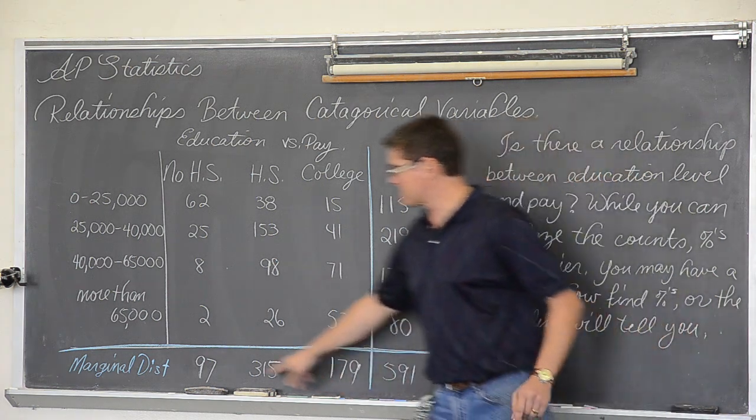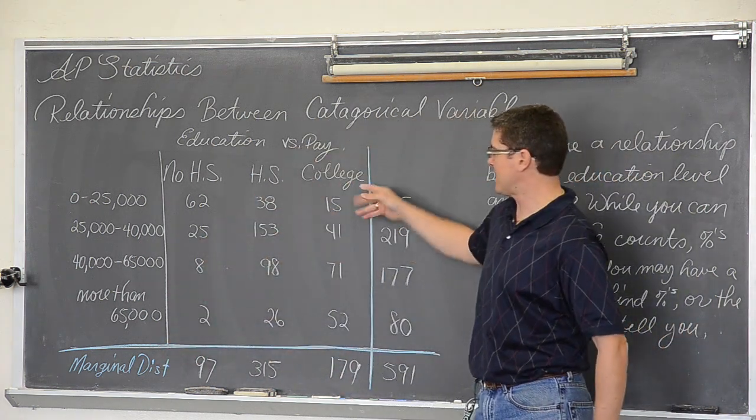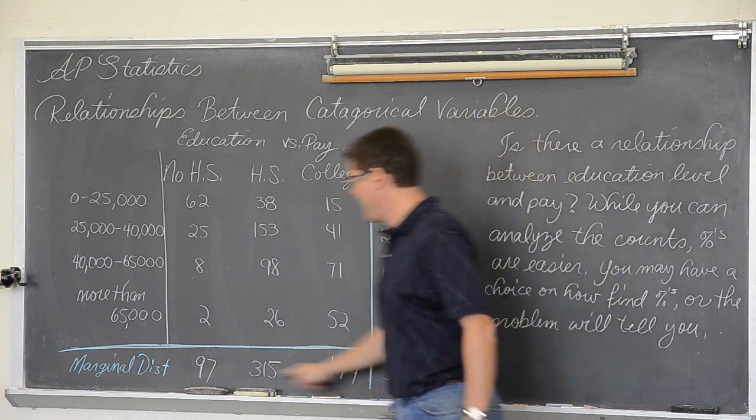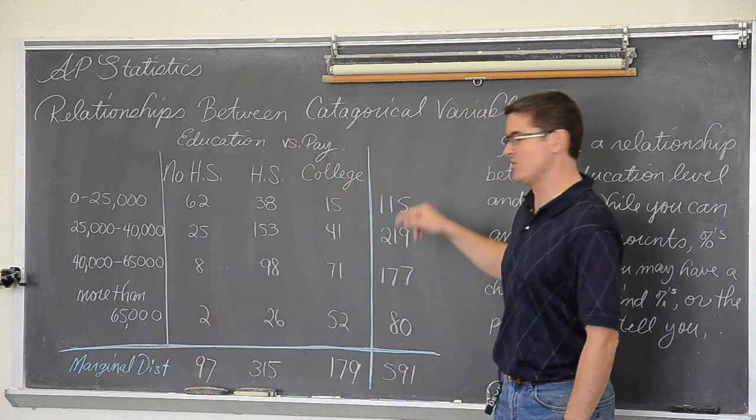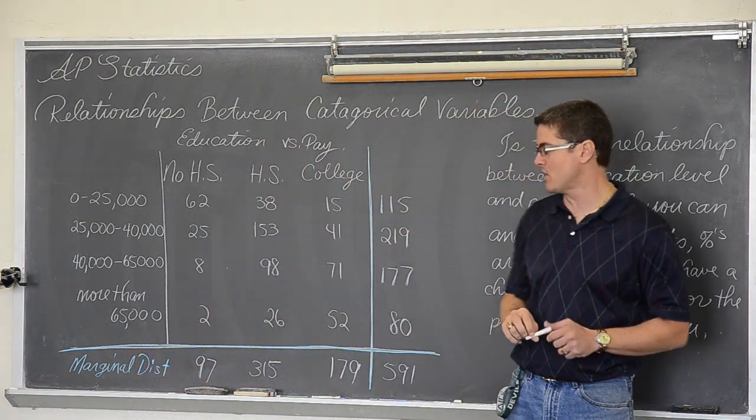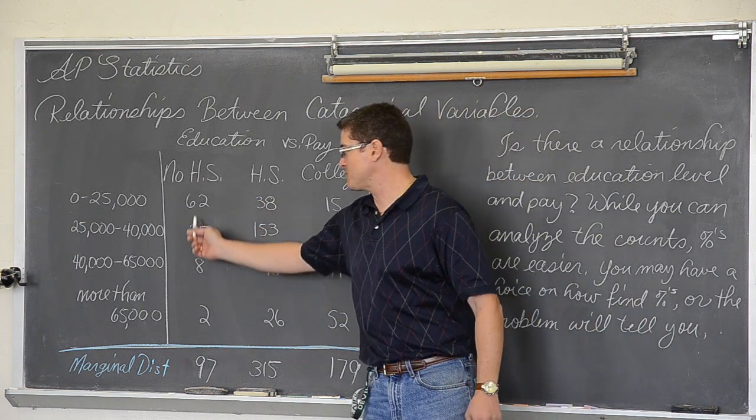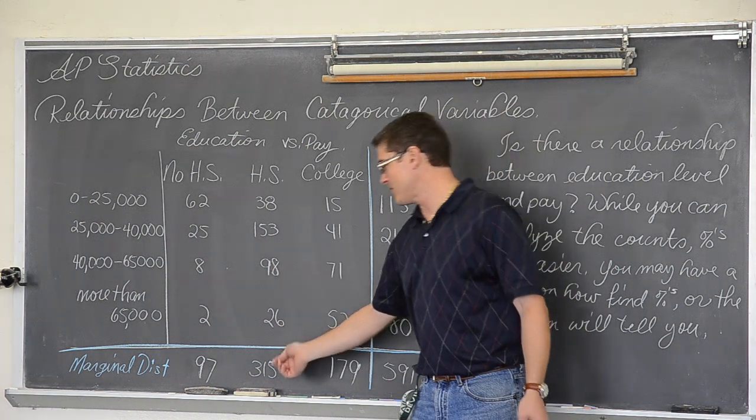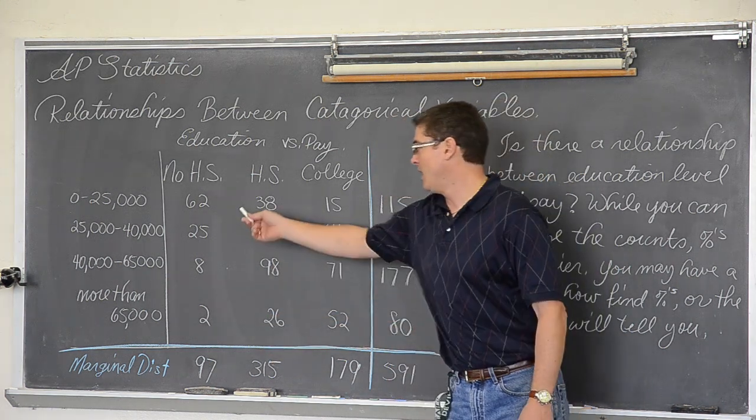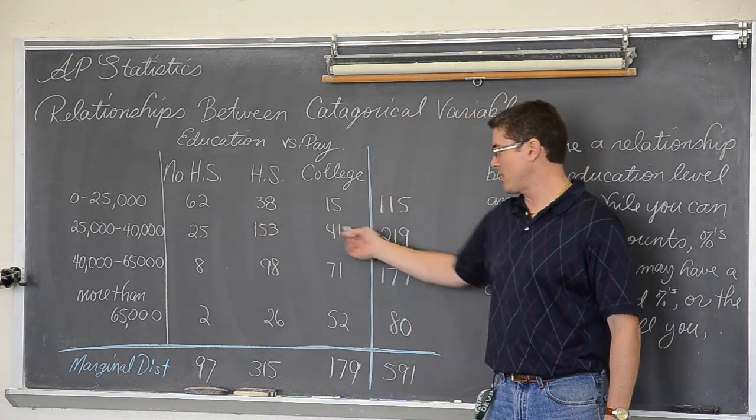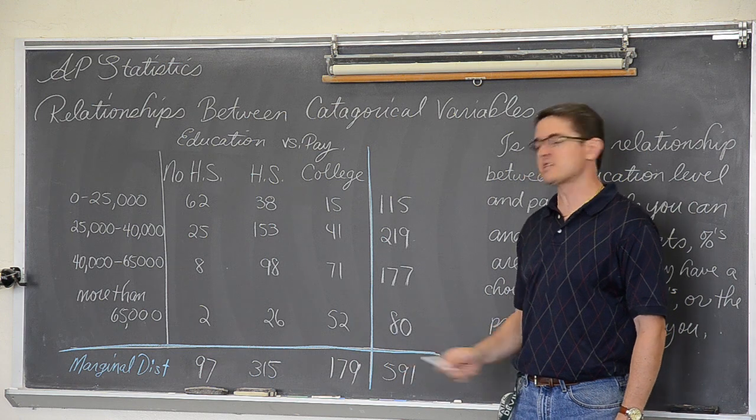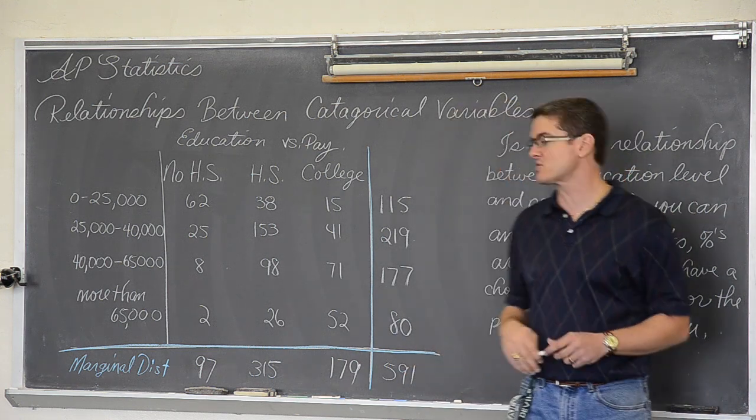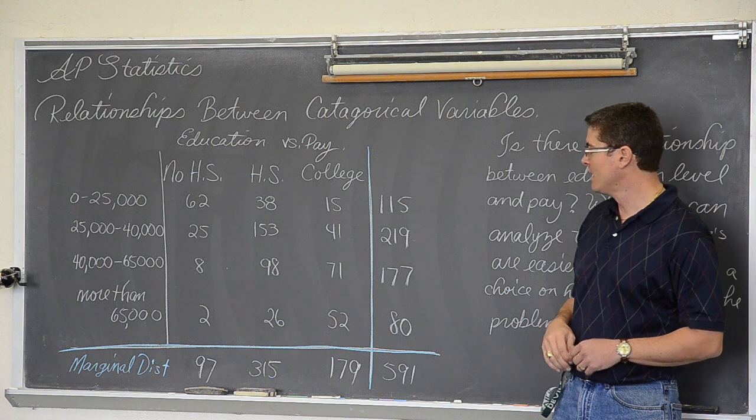Now on the outside of this table of incomes, four rows and three columns, we have what is called a marginal distribution. That is where I have just added up all the totals. So if you add up all these people that supposedly have been interviewed that did not have a high school diploma, there are 97 of them. You add up all the high schools, 315. There are totals going in the rows as well. And ultimately we have 591 people in this supposed survey that we are studying.